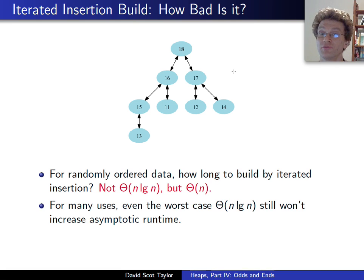Not only that, but for many uses of a heap, like if you're going to have a bunch of deletions, the deletions really do tend to take logarithmic time. So even if you use this sort of slow n log n build heap, and even if you hit the worst case n log n time, that might not increase your actual asymptotic runtime.